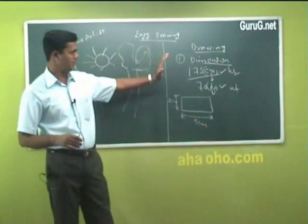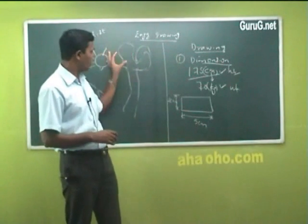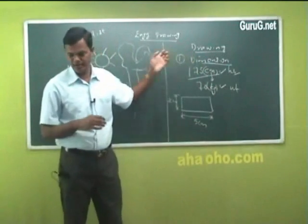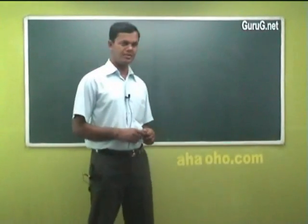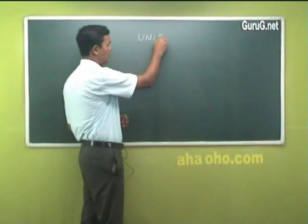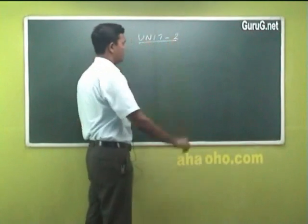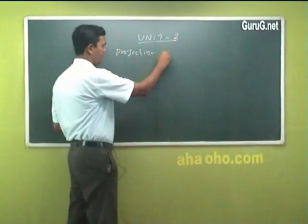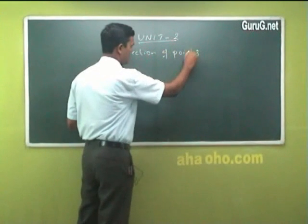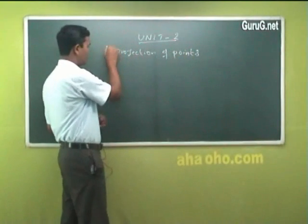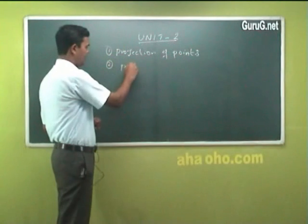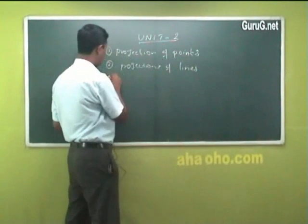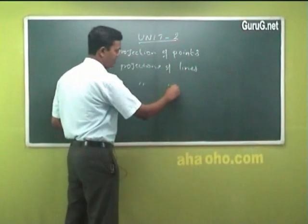That is how I differentiate between art and drawing. What we studied in school is art, and drawing requires dimensions — it is compulsory. Now I will start with Unit 2. The first topic is projection of points, the second is projection of lines, and the third is projection of planes.